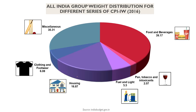This data is released in the year 2016 where food and beverages are given 39.17% weight, paan, tobacco and intoxicants are given 2.07% weight, fuel and light is given 5.5% weight, housing is given 16.87% weight, clothing and footwear is given 6.08% weight and miscellaneous is given 30.31% weight. Here groups like food and beverages and miscellaneous are further subdivided.